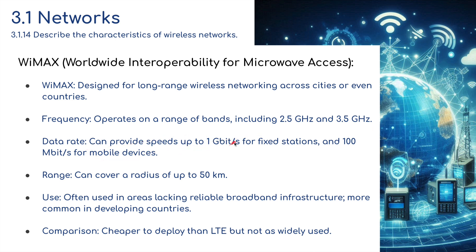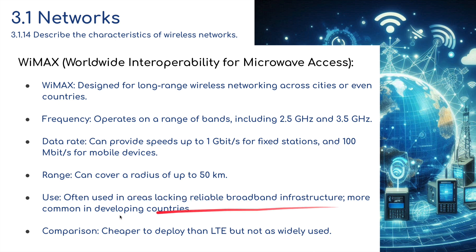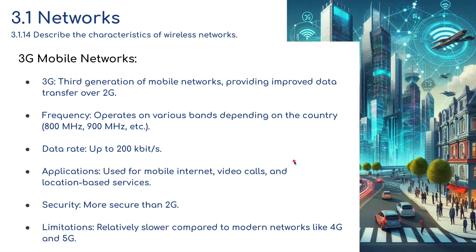WiMAX can provide speeds of up to 100 megabits per second for mobile devices and can cover a radius of up to 50 kilometers. It's often used in areas lacking reliable broadband infrastructure and is more common in developing countries. It's cheaper to deploy than LTE but not as widely used.